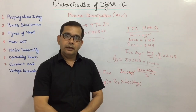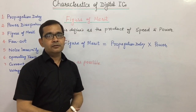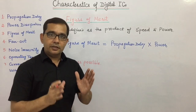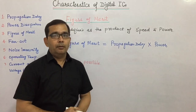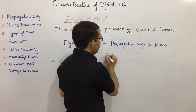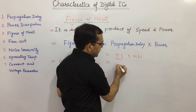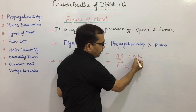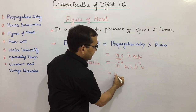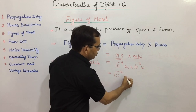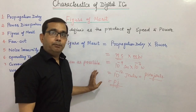The next characteristic of a digital IC is the figure of merit, which is defined as the product of speed and power. The speed of a digital IC is expressed in terms of propagation delay, so the figure of merit equals propagation delay multiplied by power. Propagation delay is measured in nanoseconds (10⁻⁹ seconds) and power in milliwatts (10⁻³ watts), giving a unit of 10⁻¹² joules — or picojoules. The figure of merit is expressed in picojoules.